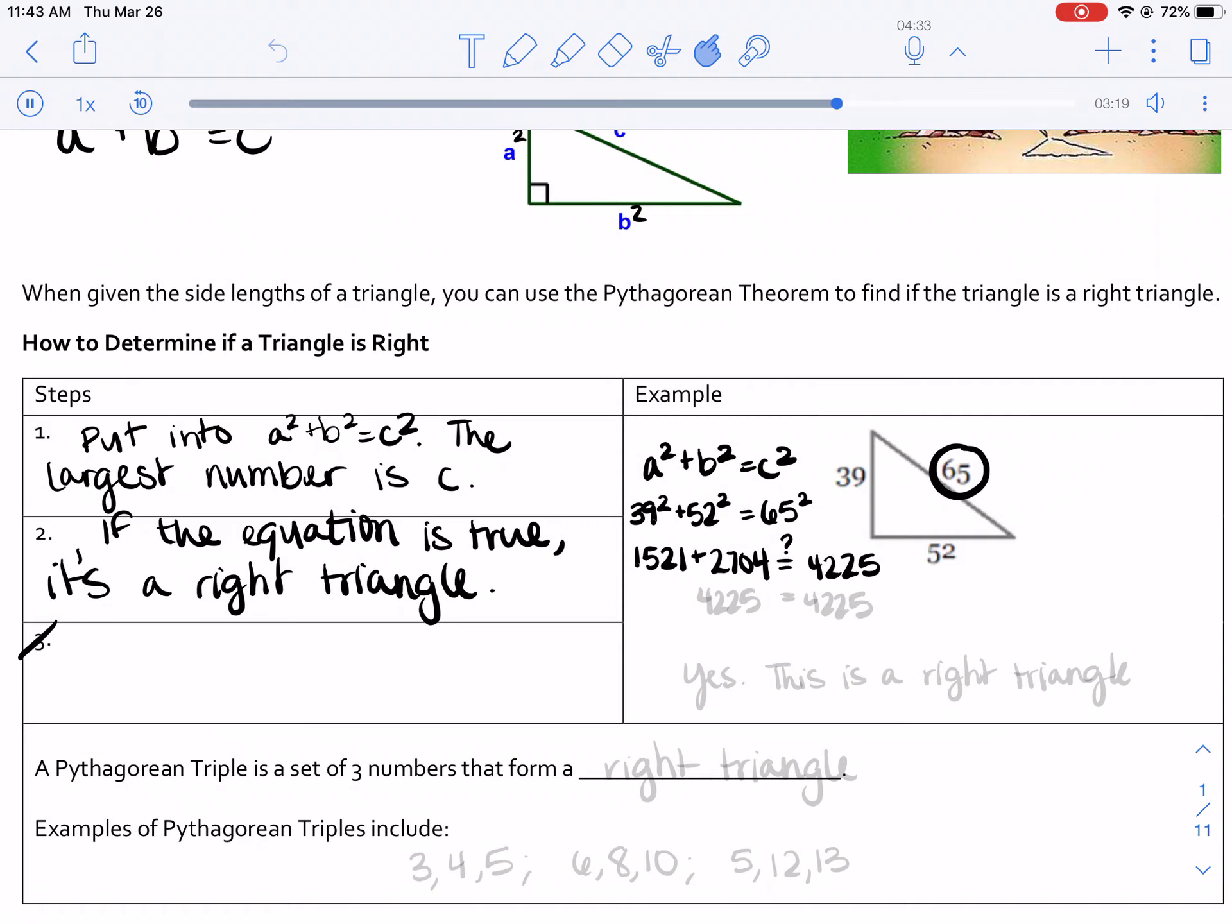When I plug 1521 + 2704 in my calculator, I get 4225. So yes, they are equal. So we say, yes, this is a right triangle.